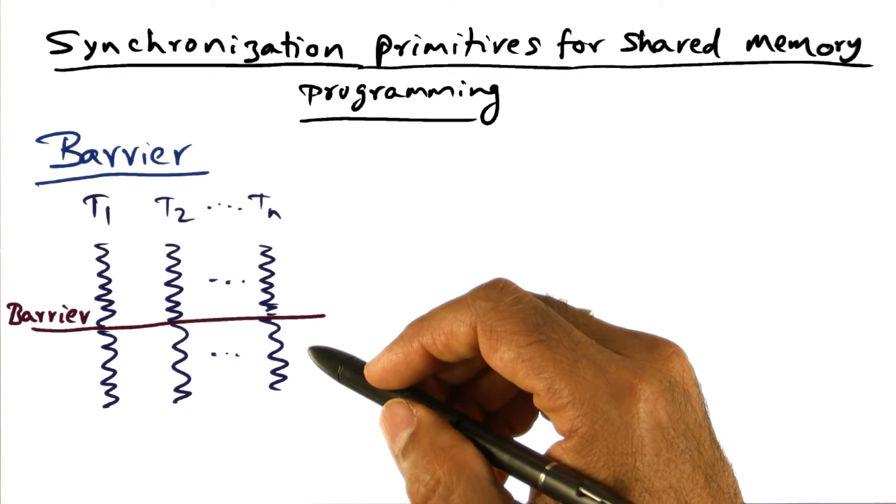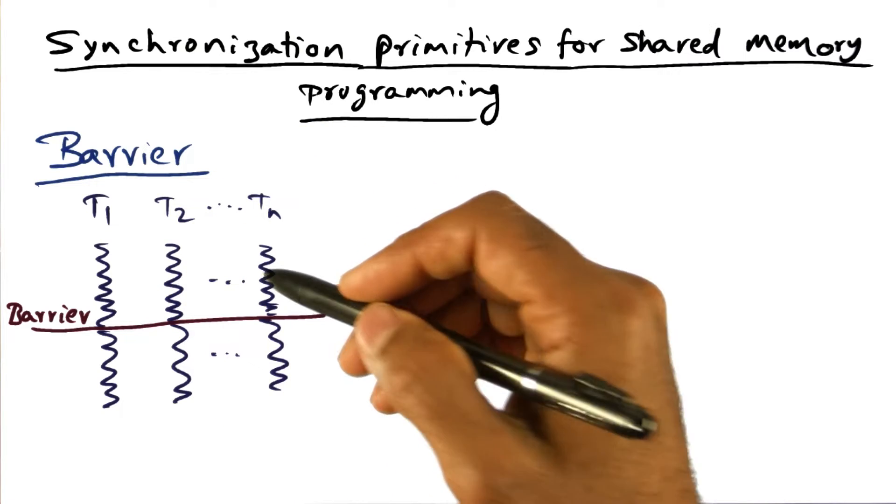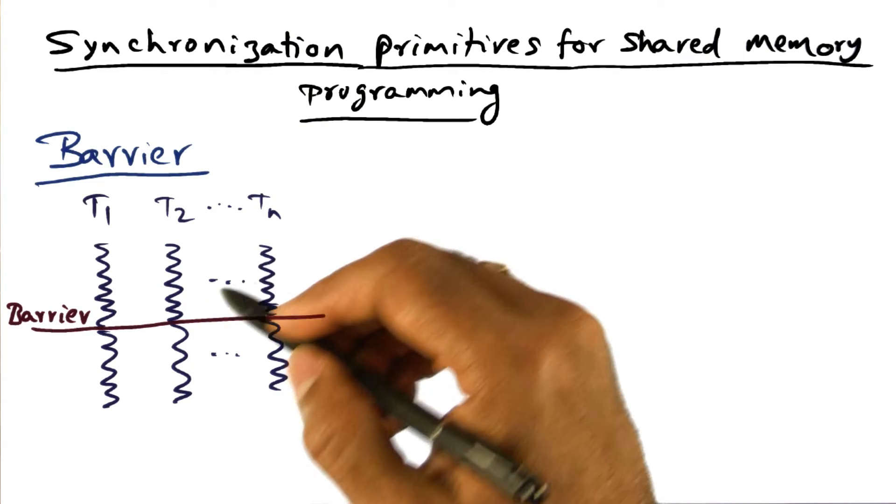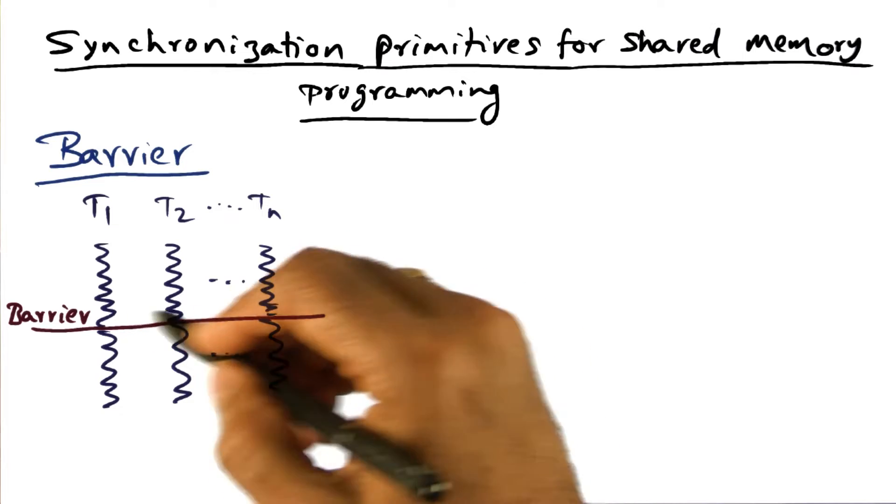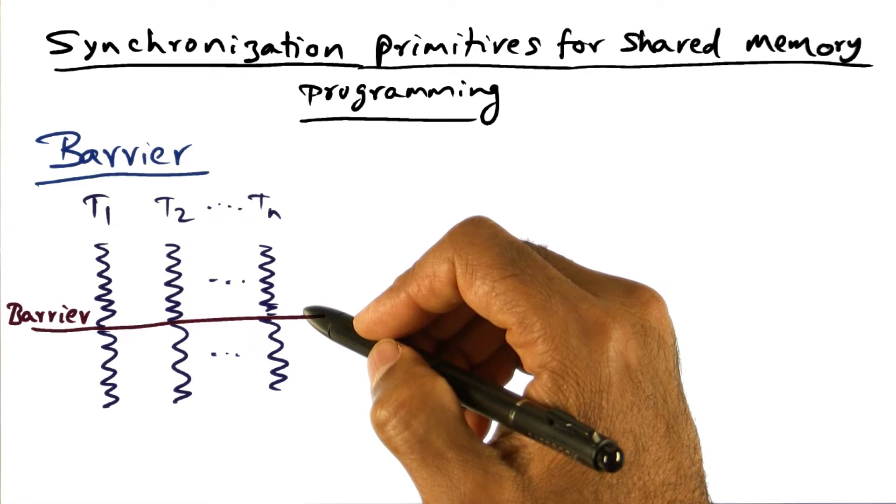The idea here is that there are multiple threads, and they're doing some computation, and they want to get to a point where they want to know where everybody else is at that point of time.